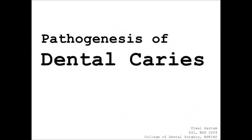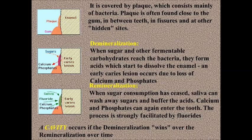Next, the pathogenesis of dental caries. There are two main processes in pathogenesis: demineralization and remineralization. In demineralization, when sugar and other fermentable carbohydrates reach the bacteria present in plaque, they form acids which start to dissolve the enamel, and early caries lesions occur due to loss of calcium and phosphates. In remineralization, when sugar consumption has ceased, saliva can wash away sugars and buffer the acid; calcium and phosphate can re-enter the tooth, and this process is strongly facilitated by fluorides. If demineralization wins over remineralization over time, then cavity formation occurs.